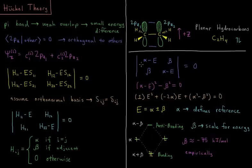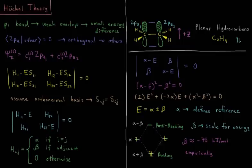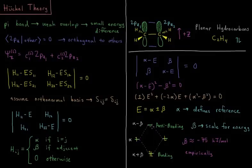They couple together through the value beta. And I get alpha plus beta in my low energy bonding orbital, 75 kilojoules per mole below the reference. And I get a high energy anti-bonding orbital, alpha minus beta. So this is the simplest case for two carbon atoms interacting with one another.